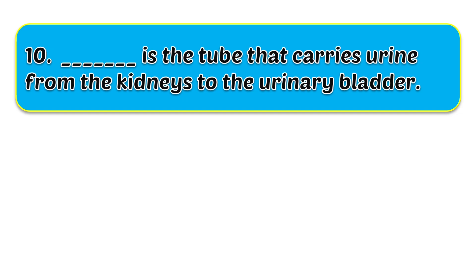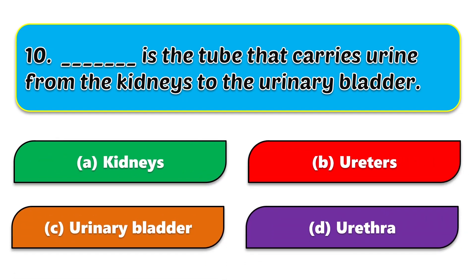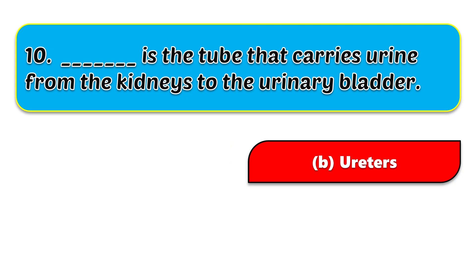The tenth question is about the tubes that connect the kidneys to the urinary bladder. The options are kidneys, ureters, urinary bladder, and urethra. The correct answer is ureters.